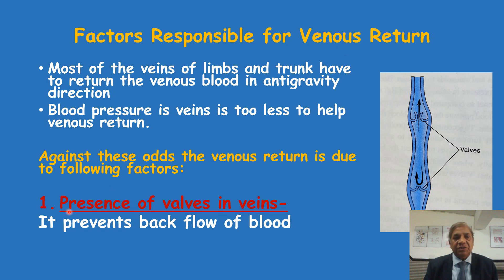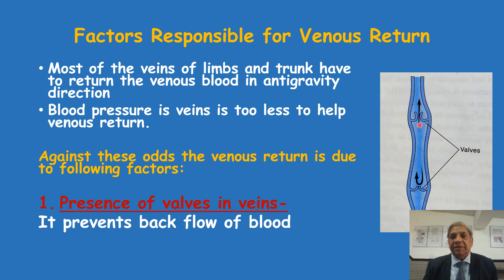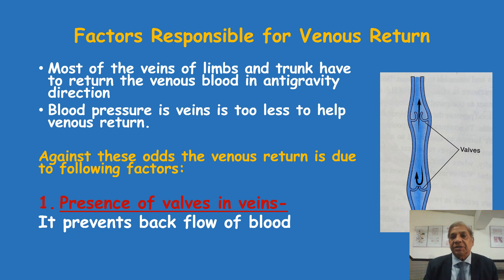The first and most important factor is the presence of valves in veins. Veins which are present in the anti-gravity direction — except the veins of the head and neck — all show valves. As seen in the adjacent diagram, blood flows in one direction only. When blood tries to regurgitate, these valves open up and back flow of blood is prevented. Once the column of blood has gone above the valve, it cannot go backward; it will have to ascend upward only. This is one of the most important factors in venous return in the anti-gravity direction.